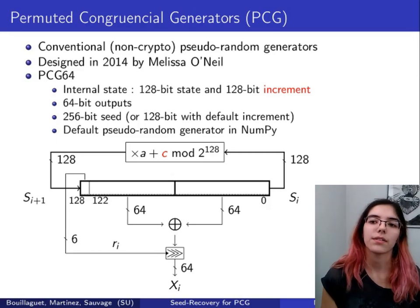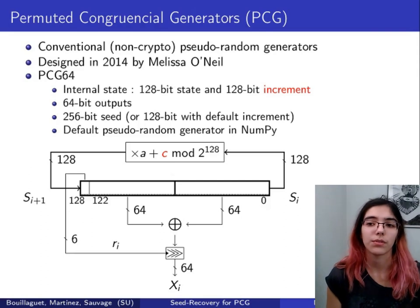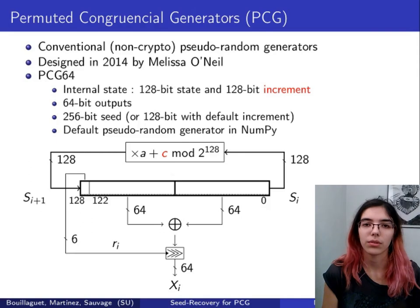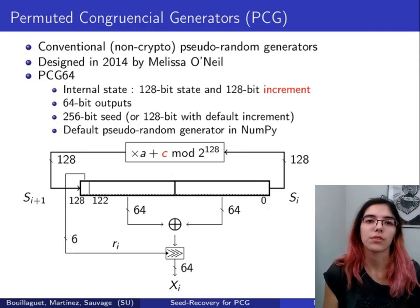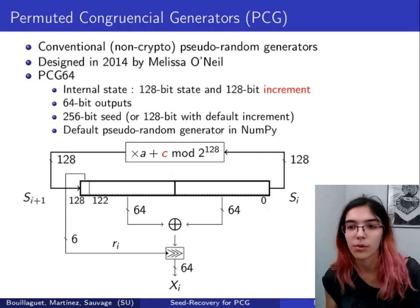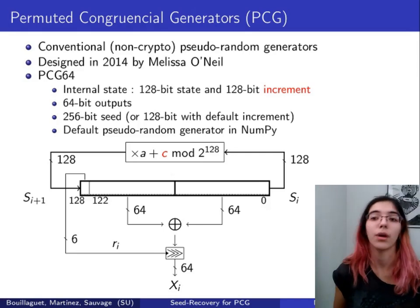More precisely, this amount is the six most significant bits of the state. So the six most significant bits give us a number between 0 and 64, which will control the rotation.